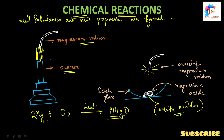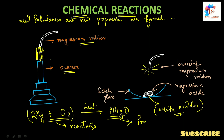So what happens in a chemical reaction? During a chemical reaction, atoms of one element do not change — only re-arrangement of atoms takes place. The substances which take part in a chemical reaction are called reactants, and the new substances produced are called products.